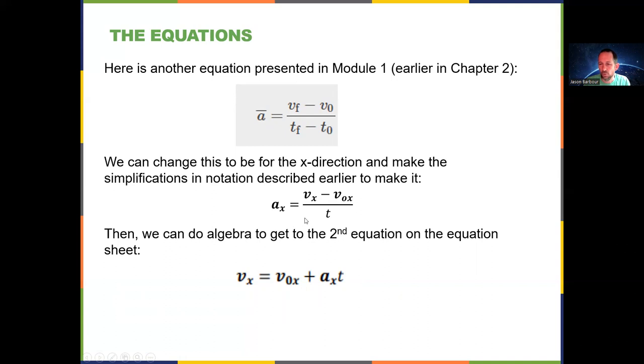Okay, and we make it for the x direction. And then once we have this, we can do just a little bit of algebra, multiply both sides by t, add v0x to both sides. And so then we would have vx by itself on the right. And then on the other side, we would have v0x plus ax times t. Then we could switch the left and right sides. And there you get the second equation on your equation sheet.